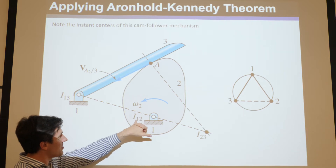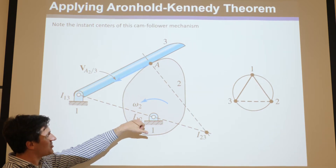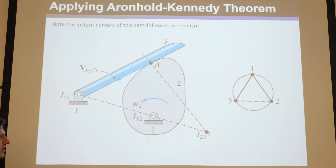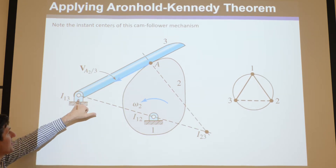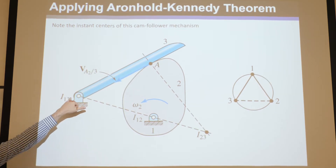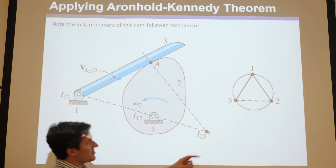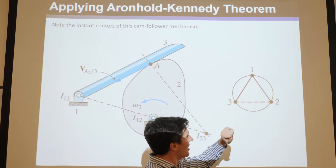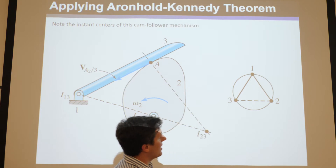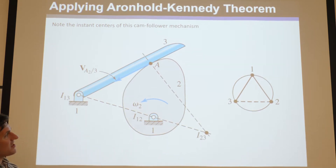It doesn't matter — you could write P12 or I12 or I21 or P21. Anyway, that instant center is obvious, and P13 is also obvious right here. The non-obvious one — the book showed this with a dashed line — is the instant center between links 2 and 3.